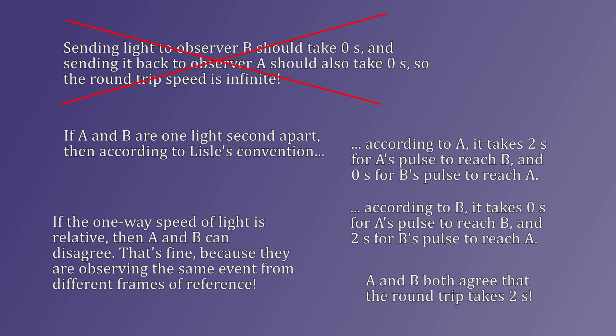In no frame of reference will it take two plus two equals four seconds, or zero plus zero equals zero seconds. And that's the key to all of this. If the one-way speed of light is relative — and I reiterate that there's no reason to think it is, and choosing to treat it as such only makes physics a lot more complicated than it needs to be — then A and B can disagree about how the event unfolds. What they cannot disagree about is the round-trip speed, which, in order for this to remain unfalsifiable, must be the same as if Einstein's second postulate held true — that in a vacuum, light always travels at C according to every inertial observer.